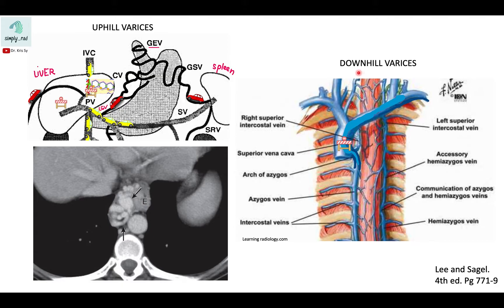Downhill varices occur when varices develop in the inferior portion of the esophagus because of a problem superiorly — specifically SVC obstruction. If there is a roadblock at the SVC, blood finds alternate pathways, going down to the hemiazygous vein, communicating with the azygous vein, and ultimately re-accessing the SVC.